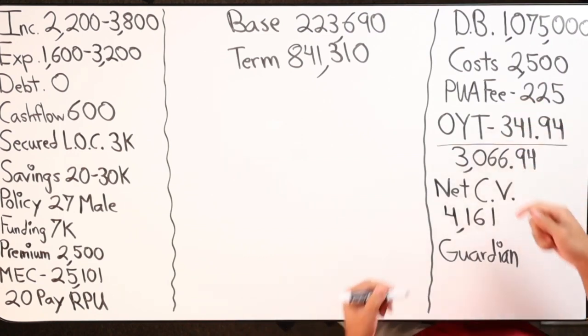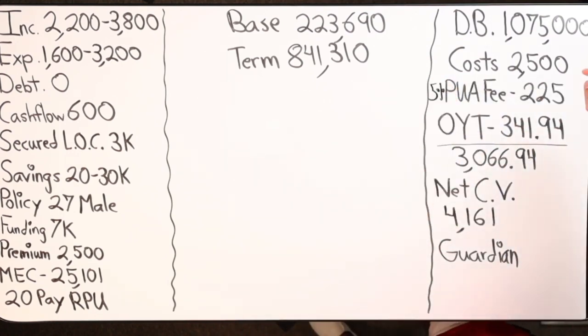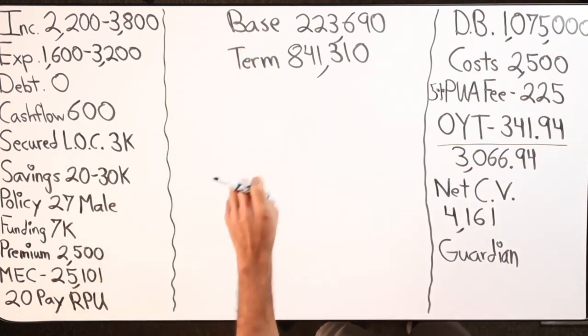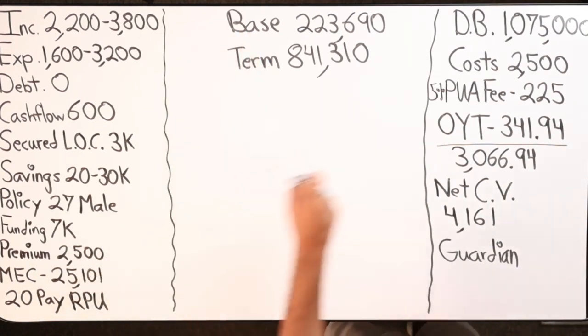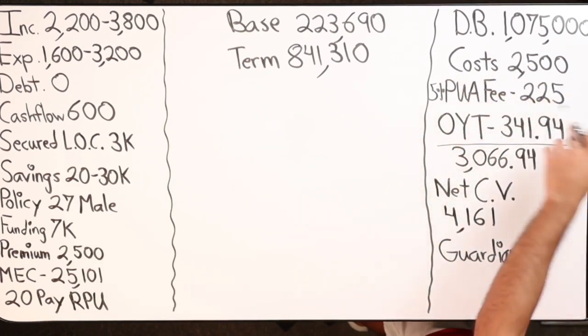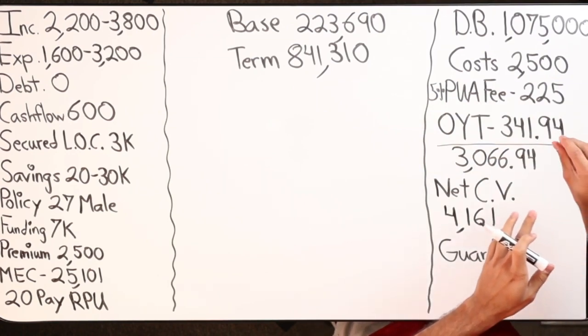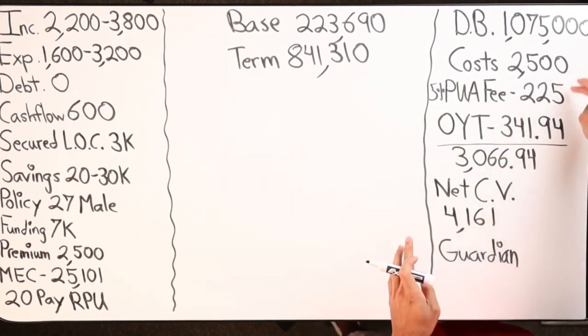For that, there's a 5% fee. So $4,500 from the $7,000, right? $2,500 goes towards premium. The other $4,500 is going towards the PUA. You take that times by 5%, you get $225. So my cost, in addition to the $2,500, I got that $225.